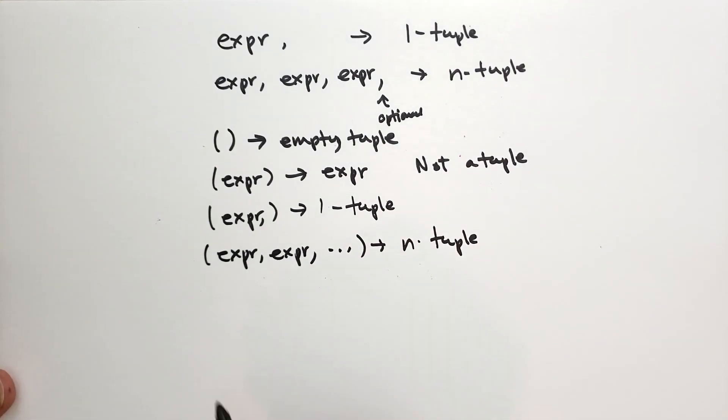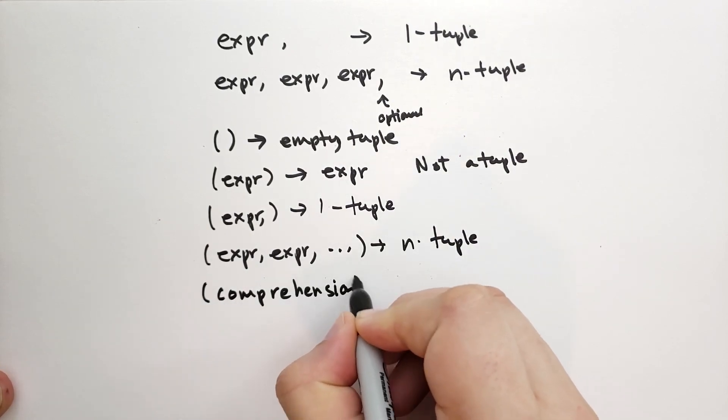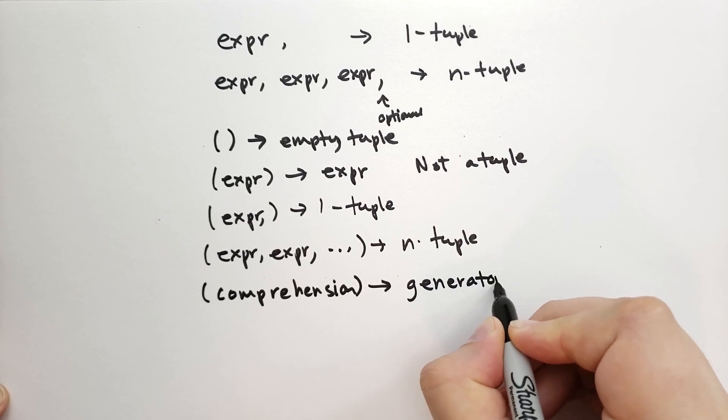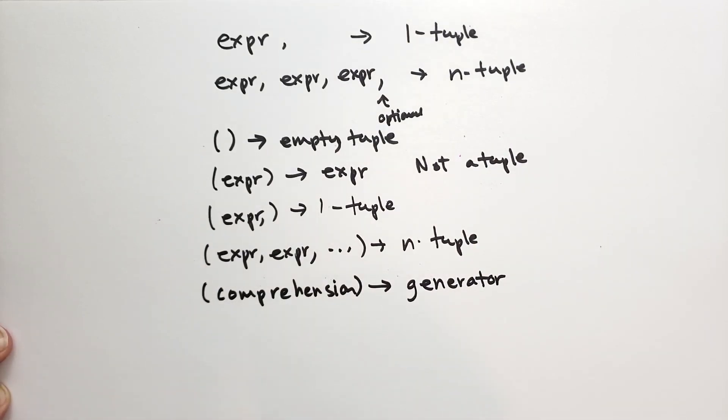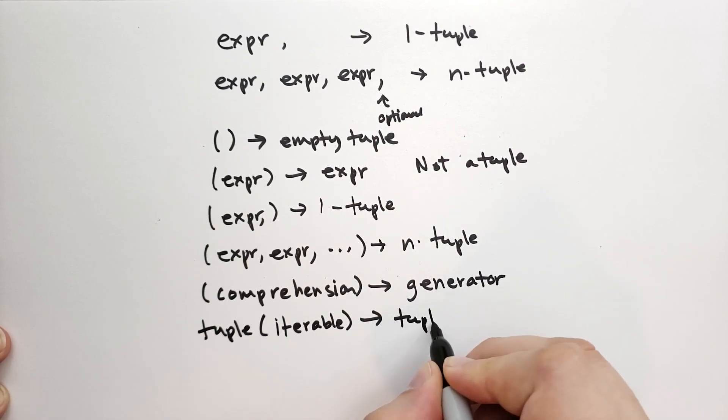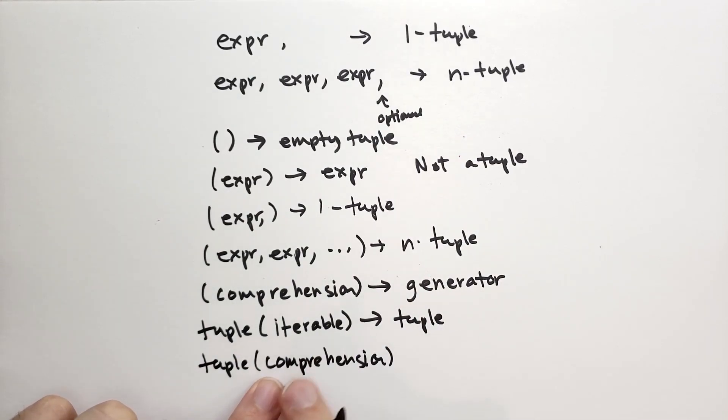And there's two other ways, well, three other ways. So the first way is you have a comprehension inside of parentheses. This does not give you a tuple. This actually gives you a generator. It's a different way to specify a generator. We'll cover this when we cover comprehensions. But you also have the tuple function that you can pass in some kind of iterable. And this will give you back a tuple.